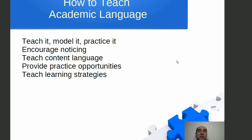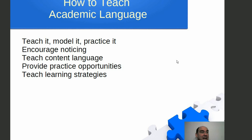How do you teach academic language? Similar to how you teach all other language — you teach it, provide an example, model it, demonstrate it, then let them practice it. You want to encourage noticing, which is very important in any form of learning. You want them to, in the words of the great Columbo, look and listen, listen and look. You want them to notice what's going on — what other students are doing in the class, notice the materials being read, notice how the teacher talks and acts.